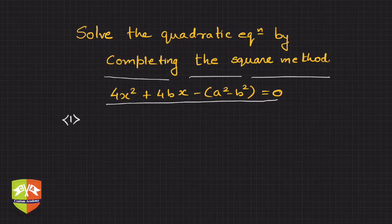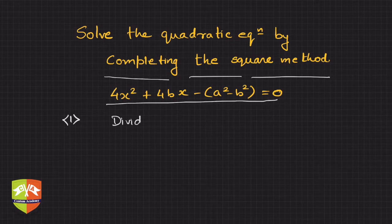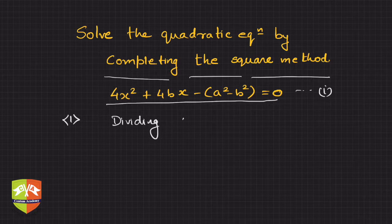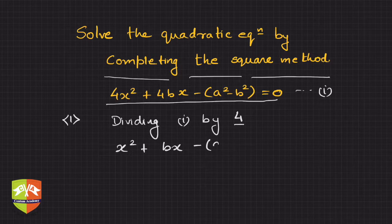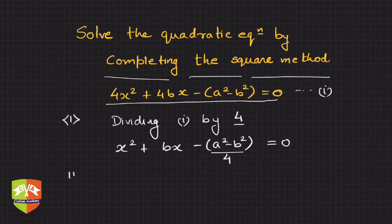The first step is to divide the entire equation by the coefficient of x². So dividing — let's call it equation 1 — dividing by 4. The coefficient of x² gives us: x² + bx − (a² − b²)/4 = 0.